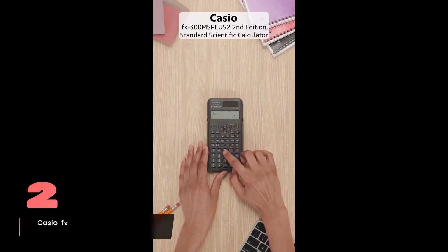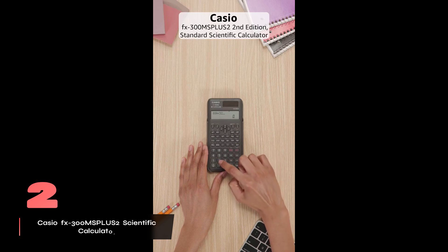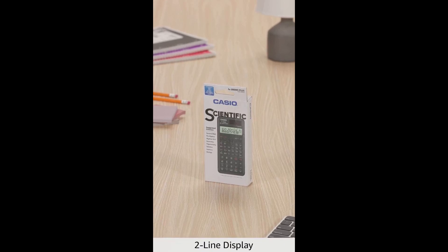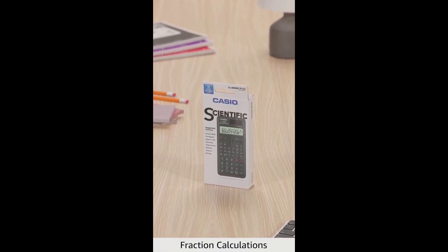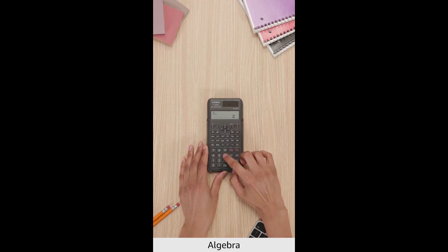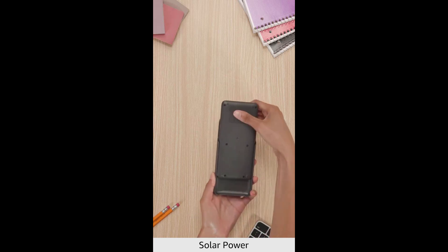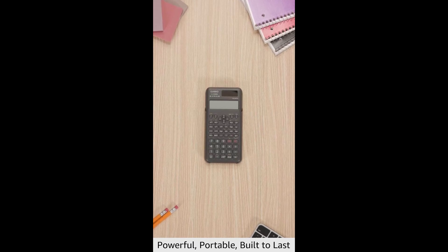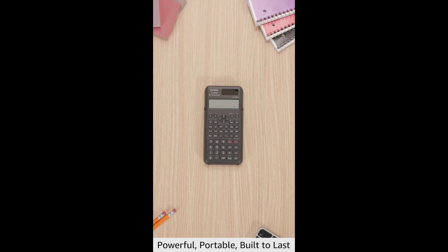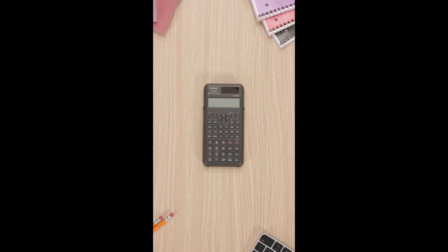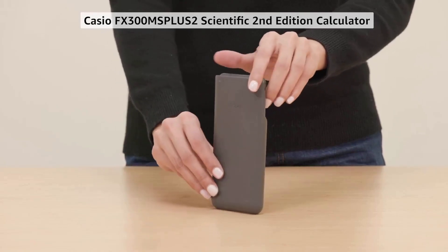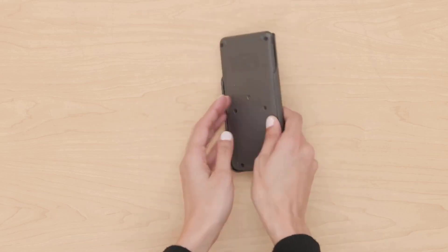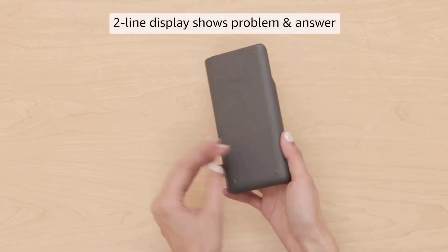The Casio FX-300MS Plus 2 brings practical functionality to your daily calculations. The dual-line display proves invaluable when tackling complex problems, letting you view both your input and results simultaneously. While it doesn't match the four-line capability of the FX-115ES Plus 2, its crisp 10-digit display ensures you can track your calculations with confidence, eliminating the need to memorize intermediate results. This calculator delivers exceptional value without breaking the bank. Coming in at a lower price point than the FX-300ES Plus 2 SAIT, it maintains comparable functionality while offering an intuitive button arrangement that feels second nature. Its lightweight design makes it perfect for students and professionals who need reliable computing power on the move.